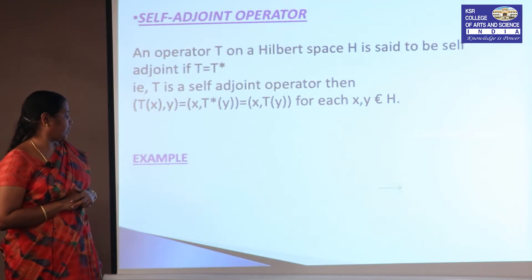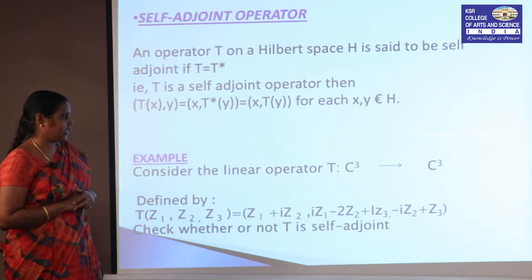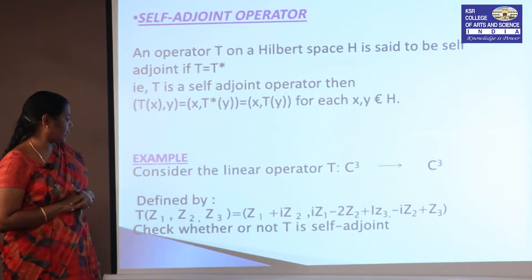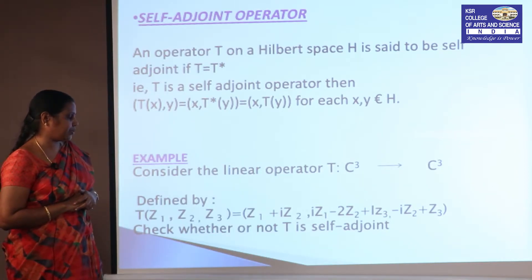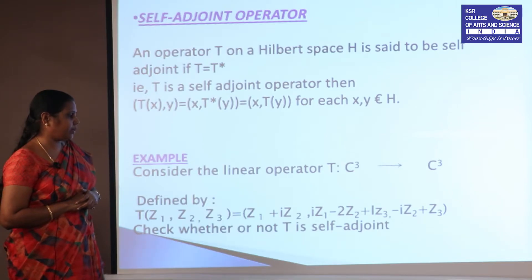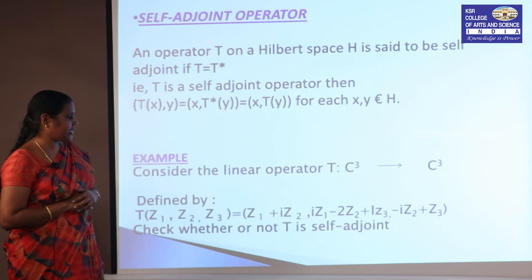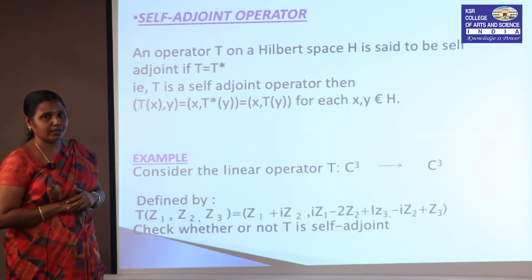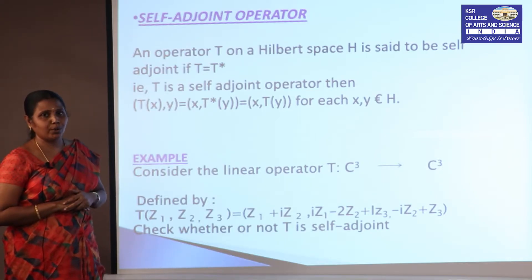Next, consider the linear operator T from C³ to C³ defined by T(z₁, z₂, z₃) = (z₁ + iz₂, iz₁ − 2z₂ + iz₃, −iz₂ + z₃). We need to check whether this operator T is self-adjoint or not.